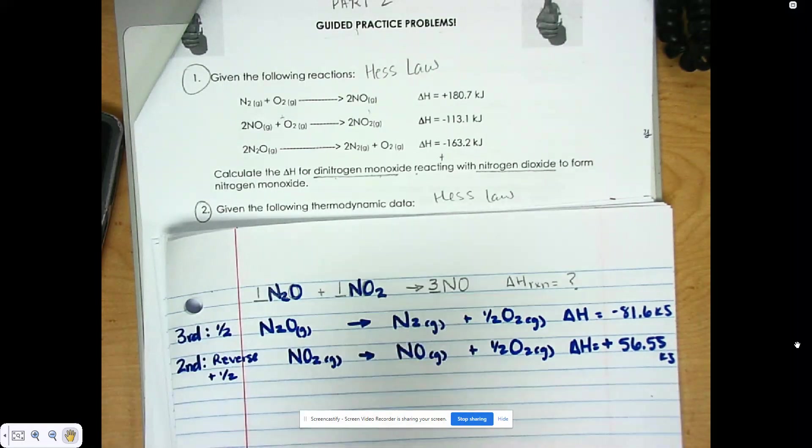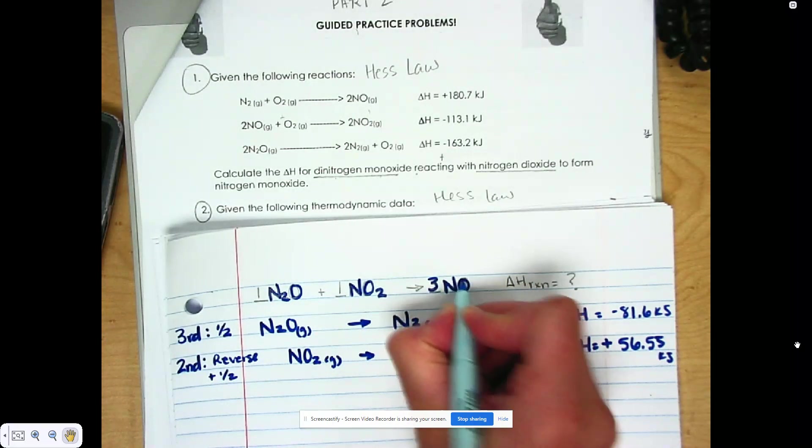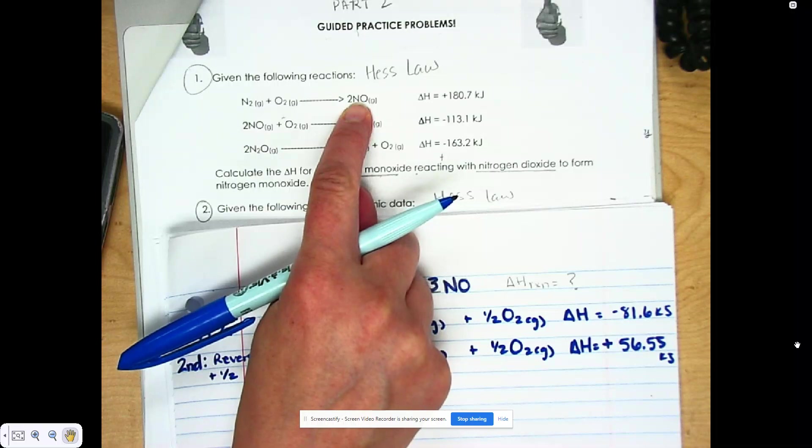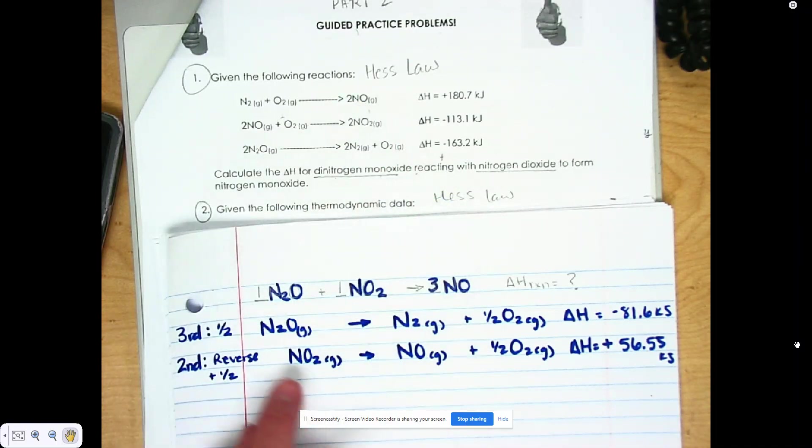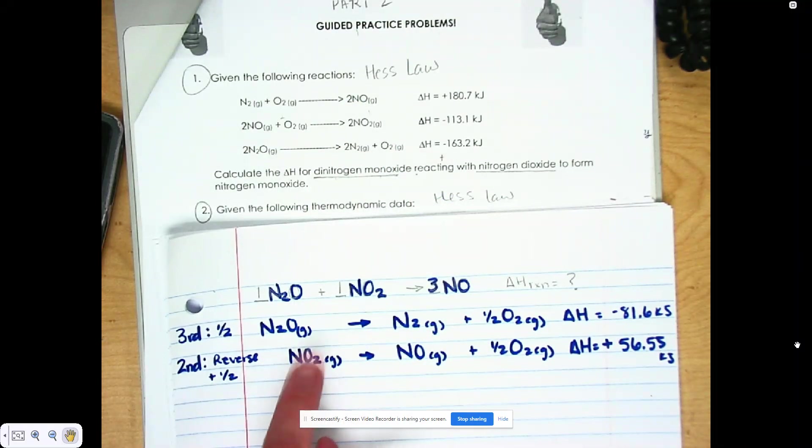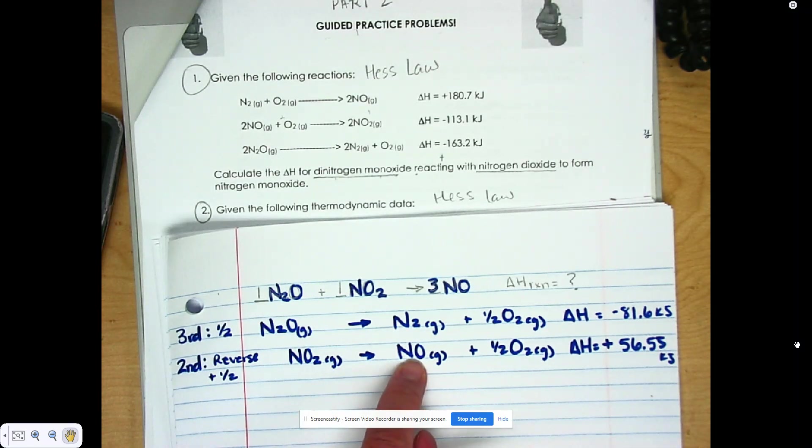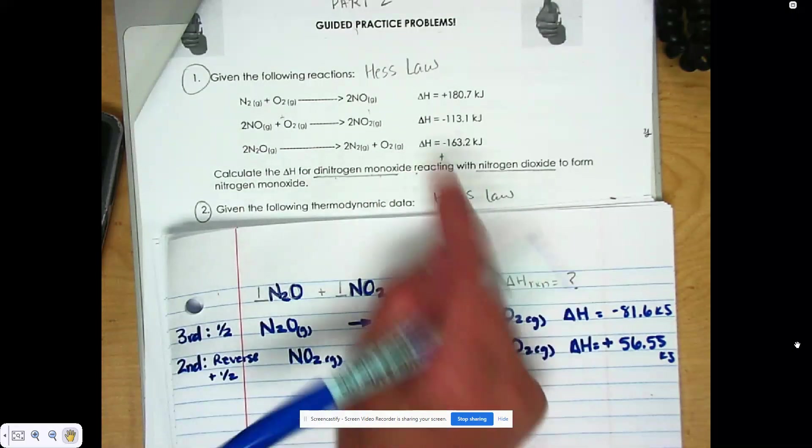And finally, for our product, I need three NOs. My NO is given to me in the first equation. I have two of them. But I want you to note that we also have another NO right here in the product side as well. So this one could add up to the two that are given to us here.